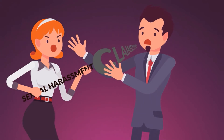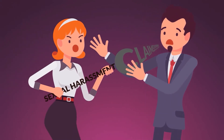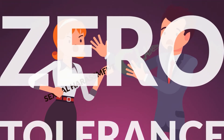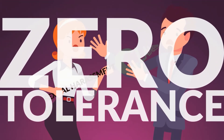We'll then talk about the role of the line manager, who's often at the sharp end of sexual harassment claims, and is responsible for communicating the organisation's zero-tolerance approach to members of staff.